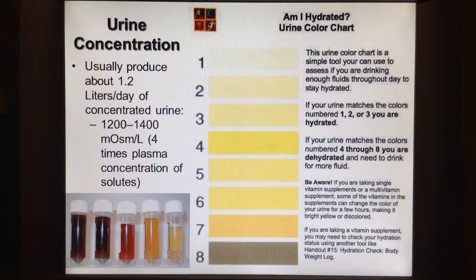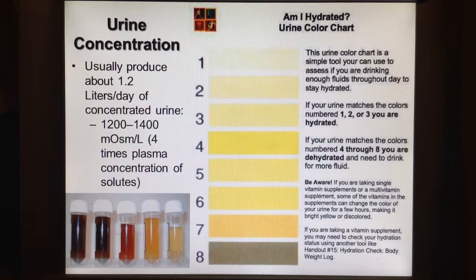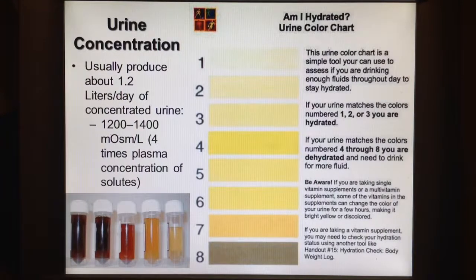You usually produce about 1.2 liters a day of concentrated urine. The urine color chart is a quick indication of whether someone is dehydrated or not. Note that vitamins can certainly change the color of urine, so keep that in mind.